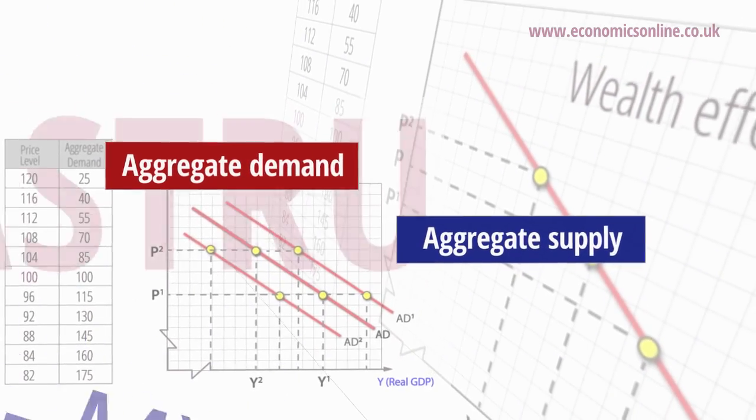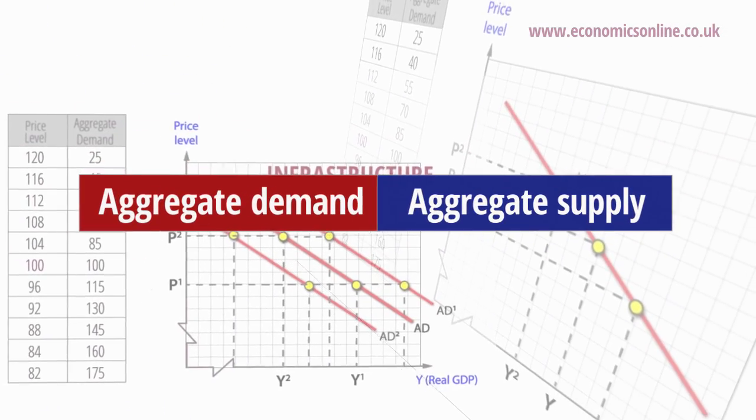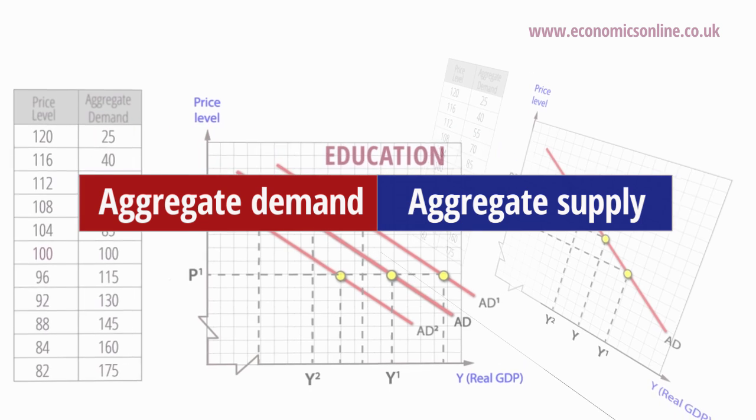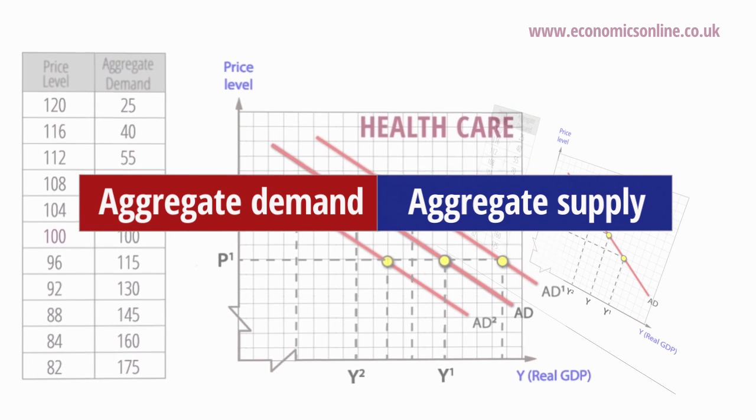The Aggregate Demand, Aggregate Supply model, or ADAS model for short, is the essential tool to model the macroeconomy at A-level.